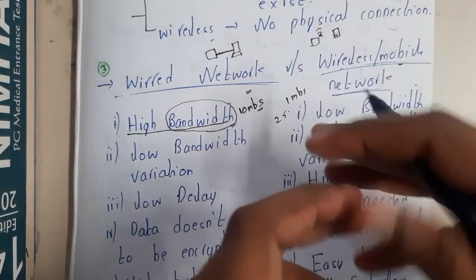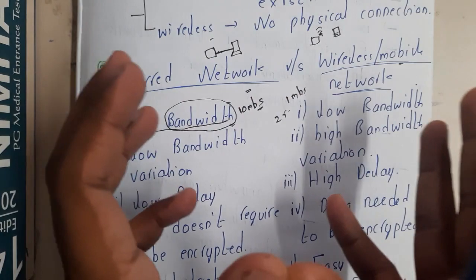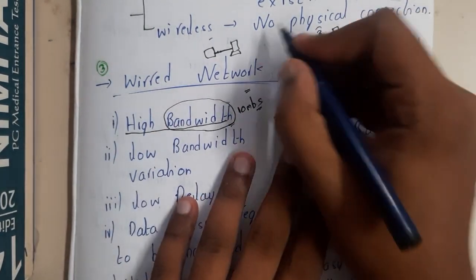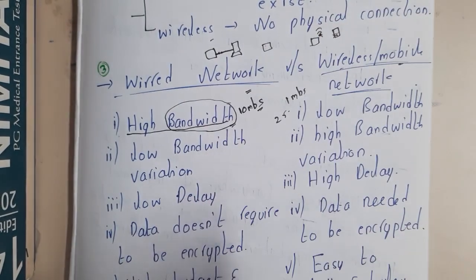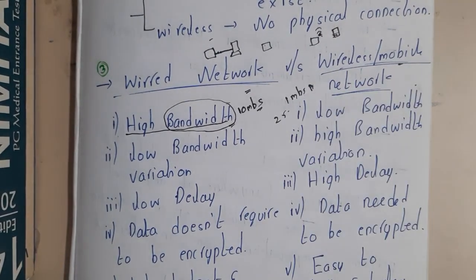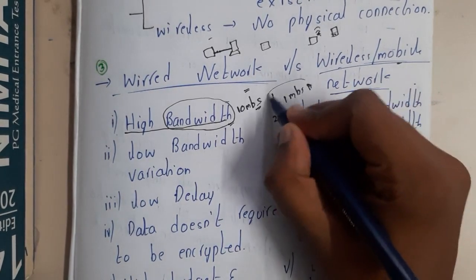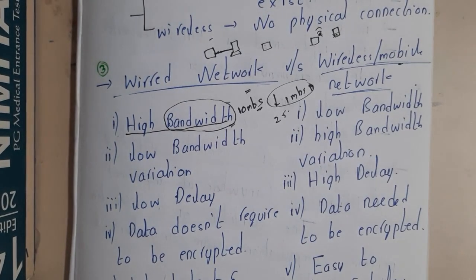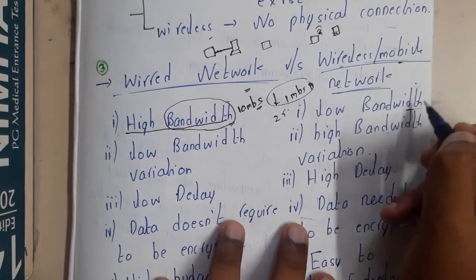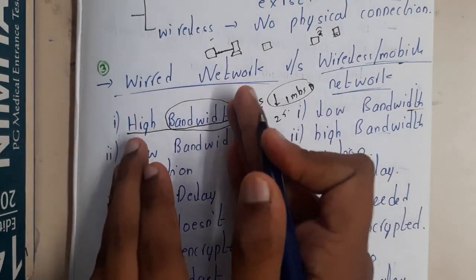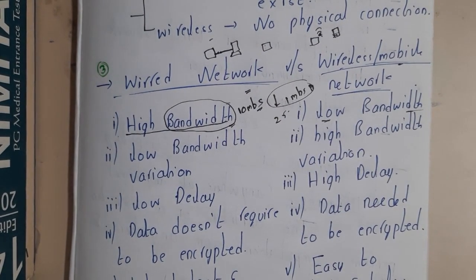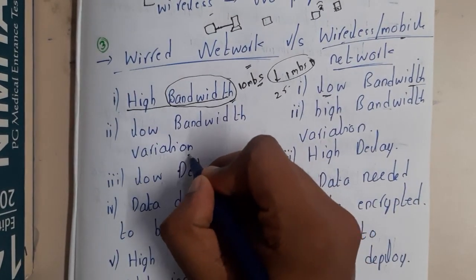In wireless, since there is no wire, signals must go in all directions, which increases signal weakness. If you sit beside your Wi-Fi modem you get faster speed, but in another room you get lesser speed. Speed also depends on distance and multiple factors, so overall bandwidth in wireless is low compared to wired.